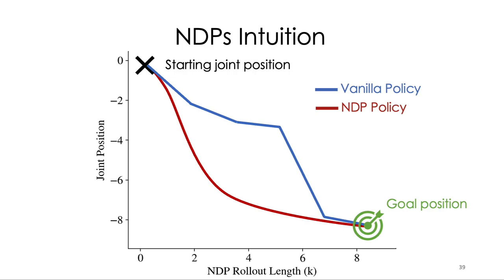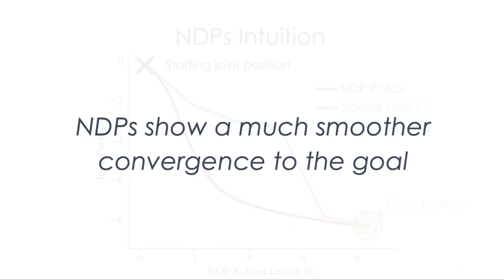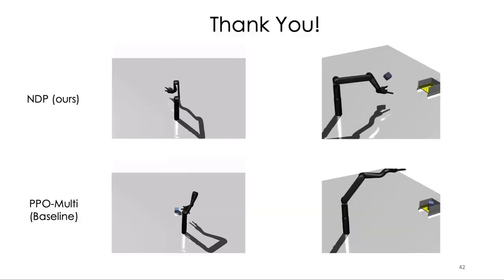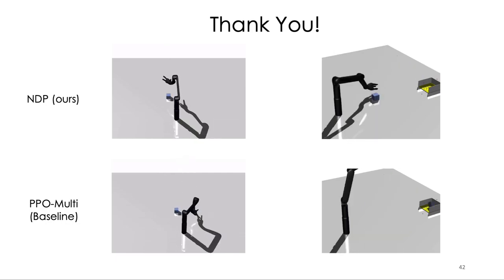On the other hand, the red trajectory, governed by an NDP, shows a smooth convergence to the same goal. We evaluate our method on various continuous control tasks in the reinforcement learning and imitation learning settings. We can see that our method, shown in red, outperforms several prior methods, either in terms of absolute performance or sample efficiency. For more information, we encourage you to check out our paper.